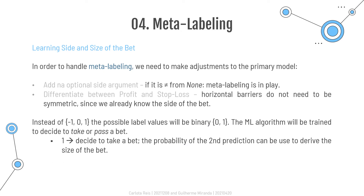By adjusting the first model to handle meta-labeling, there is a new side optional argument, which by default is set to none and contains the side of the bet. When the side argument is different from none, the function understands that meta-labeling is in play. One important fact is that, because now the side is known, the horizontal barriers do not need to be symmetric, and we can differentiate between profit and stop-loss. With this adjustment, the label values are now 0 or 1 instead of minus 1, 0, or 1. The machine learning algorithm is trained to decide whether to take a bet or to pass — a binary prediction. When the prediction is 1, the probability of this second prediction can be used to derive the size of the bet, where the side of the position has been set by the primary model.